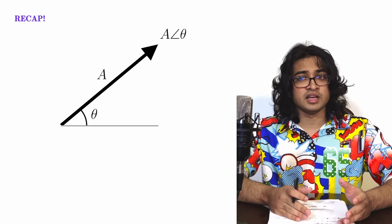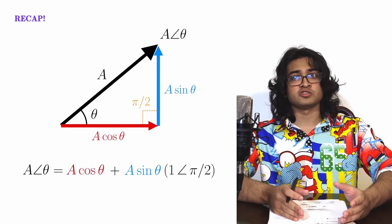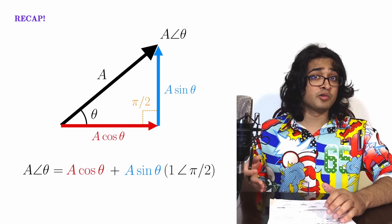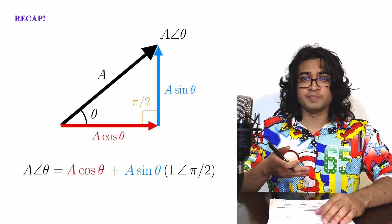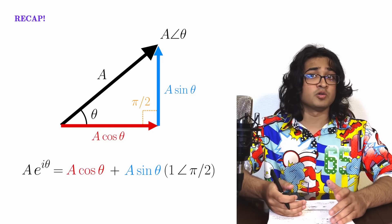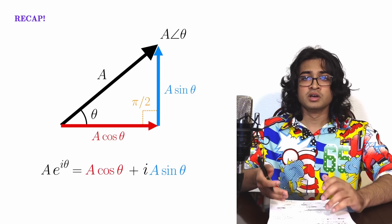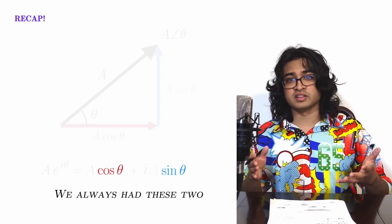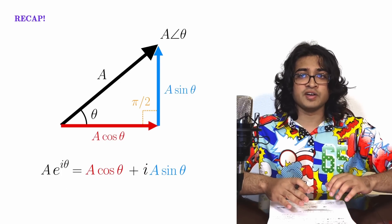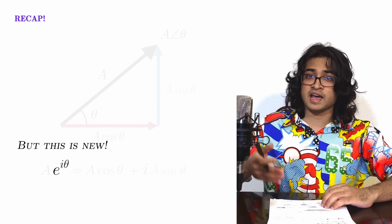Remember when we turned A angle theta into a vertical and horizontal component? We saw that it made a right triangle and that's why sine and cosine got involved. Euler's formula says the same thing that we did. It just replaces A angle theta with A times e to the i theta and it replaces one angle pi over 2 with the imaginary unit i. So we already had the sine and the cosine, so that's not really the cool part. What is cool is the fact that we can use Euler's number e and represent polar objects as exponentials.